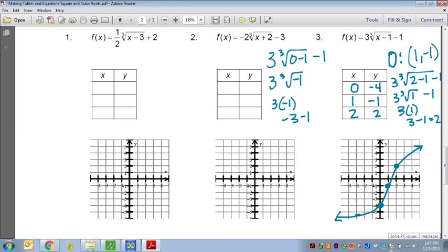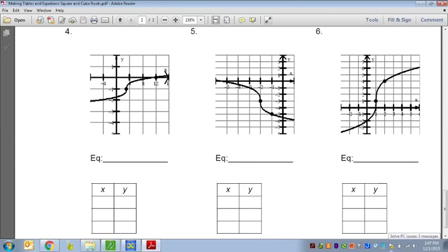And again, I'm choosing numbers for x that work perfectly for cube roots. And for cube roots, positive 1 and negative 1 are both great roots that we can use. Let's go ahead and now give you the graph where you have to make the equation in the table. All right, so number 6. Let's take a look at number 6 here.